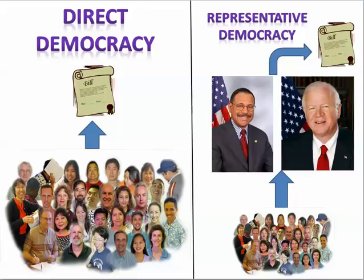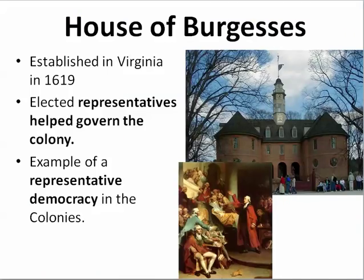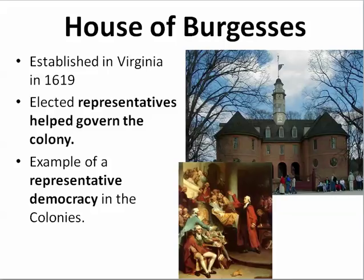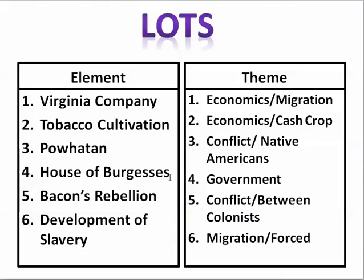Returning to the House of Burgesses: established in 1619, it is the first example of representative democracy within the colonies. In Jamestown, Virginia, and throughout the Virginia Colony, citizens would go to the polls, cast their votes for representatives, and then those representatives would go to the House of Burgesses — the legislative body — and vote on their behalf. That is how the House of Burgesses plays into the development of Virginia's government.